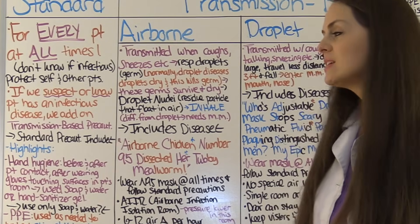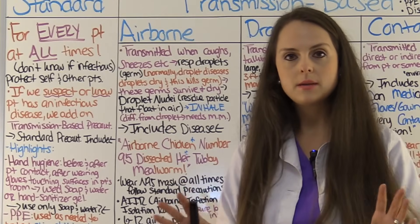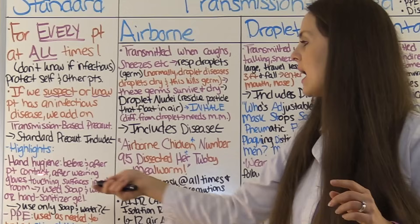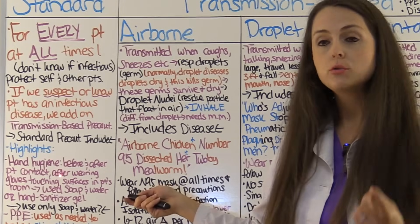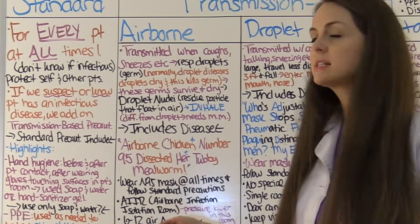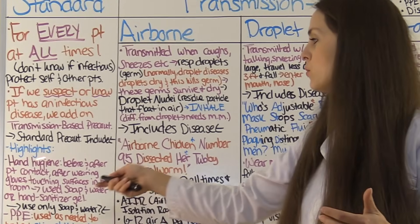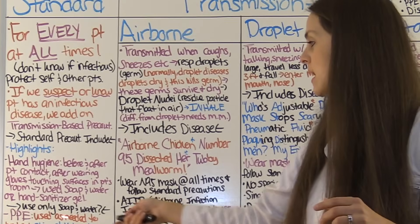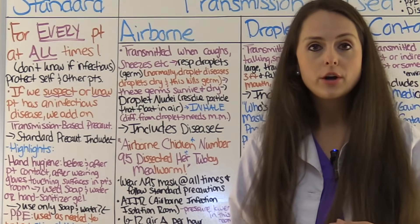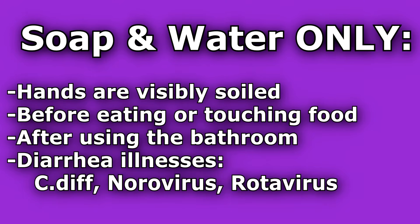Hand hygiene will be performed before and after patient contact, after wearing gloves, and after touching any surfaces in a patient's room. You will use either soap and water or hand sanitizing gel. However, you must use only soap and water when your hands are visibly soiled, before eating or touching food, after using the bathroom, or if the patient has a diarrhea illness like C. diff, norovirus, or rotavirus.